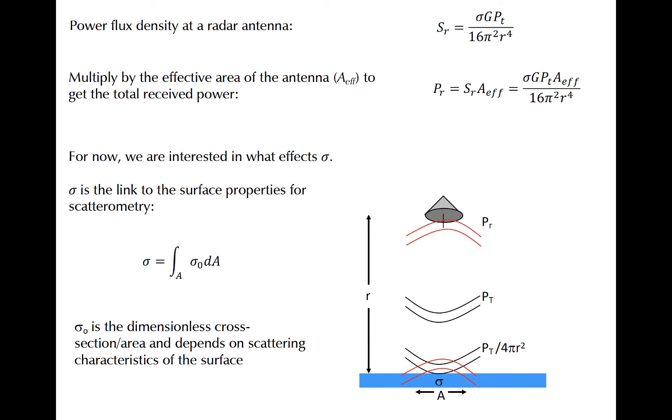We can use this normalized scattering cross-section, or normalized backscatter cross-section, sigma nought, to derive wind speed and direction, because it is what depends on the properties of the ocean surface. In other words, everything in our equation for received power here is fixed: the gain, the power transmitted, the effective area, and the range, except for this sigma right here. So by converting power received to some value of the backscatter coefficient, we can back out information about the wind, because it predominantly impacts the scattering properties of the ocean surface.